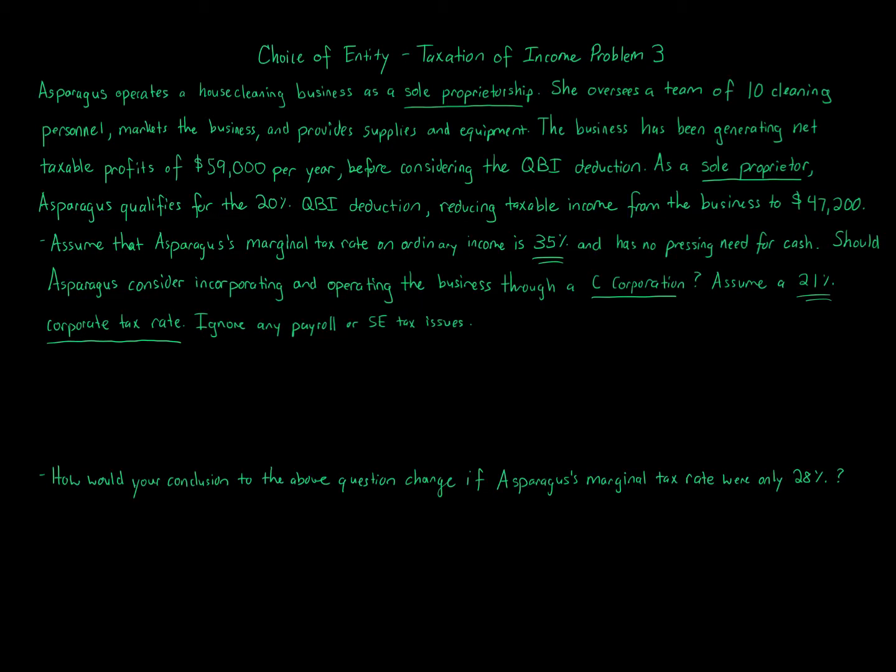All we have to do here is calculate what Asparagus would pay on the profits, the $59,000 per year of taxable profits before the QBI deduction. Considering the QBI deduction, it would be $47,200. You could calculate this yourself by taking $59,000 times 20% and subtracting that away from $59,000, and you'll get $47,200.